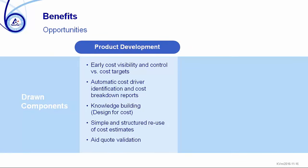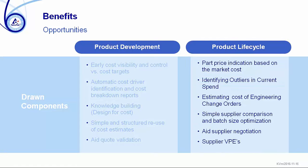What are the benefits of using aPriori? The major benefits are early cost visibility and understanding versus cost target, automatic cost driver identification, knowledge building, simple and structured reuse of cost estimates, and aid in cost validation in product development. During the product lifecycle, you get a part price indication based on market cost, can identify outliers in current spend, estimate the cost of engineering change orders, do simple supplier comparisons, batch size optimization, and aid supplier negotiation.